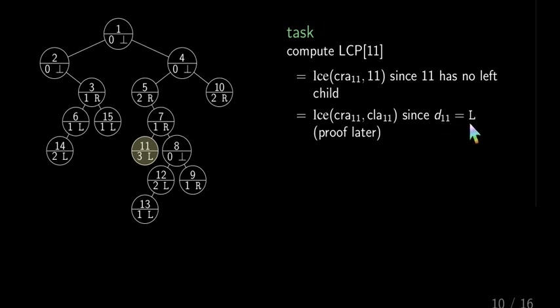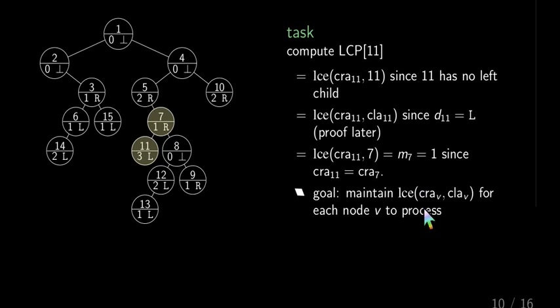So it's the cray of 11 with the clay of 11, the LCE, because the D value is L, so the flag is L. And then we can use the fact that for 7, which is actually the clay of 11, that 7 has flag R. So it compares with 5, but 5 is the cray of 7 and 11. So 7 already stores this LCE value in its M value, which is 1, and we're done. So the goal is, can we maintain this LCE value of cray and clay and also show this proof?